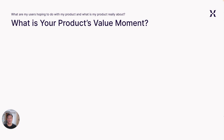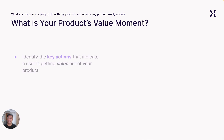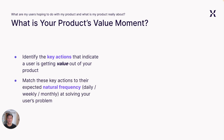Your product metrics and KPIs should be defined around your product's value to your target users. Think about the problem that your product is trying to solve for your target customers. You can do this by first identifying the key actions that indicate a user is getting value out of your product, and then match these key actions to their expected natural frequency at solving your user's problem.